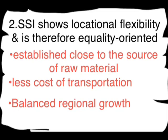If raw materials are close by, transportation costs are saved, the cost of production is reduced, and therefore the price of products will be reduced. Small scale industrialists can establish their units in various regions, including regions where large scale industries cannot set up. This promotes balanced regional growth and equality across different areas of the country.